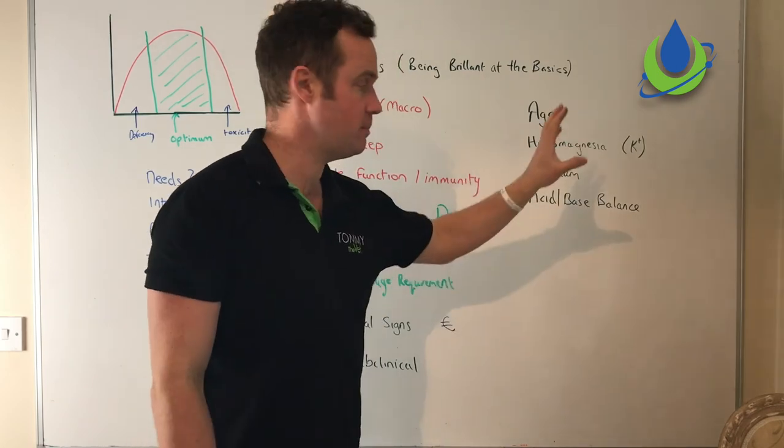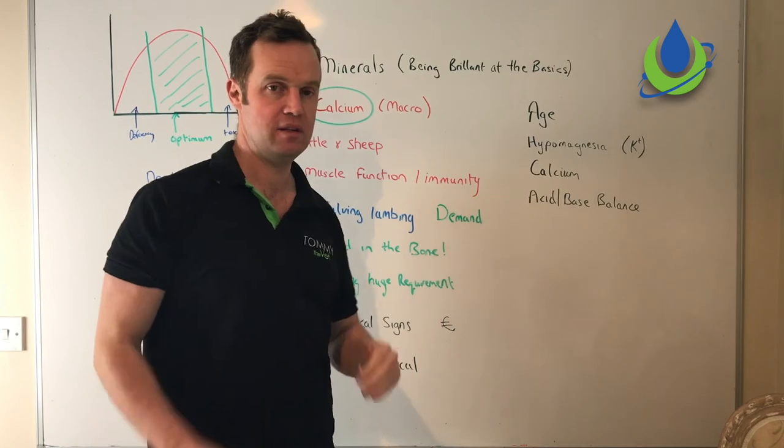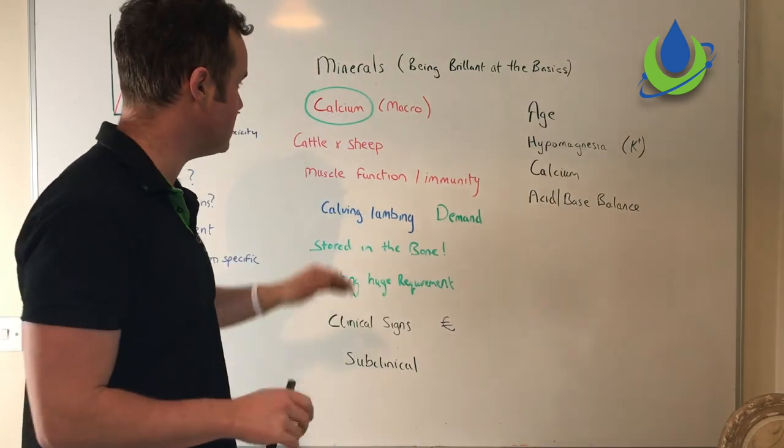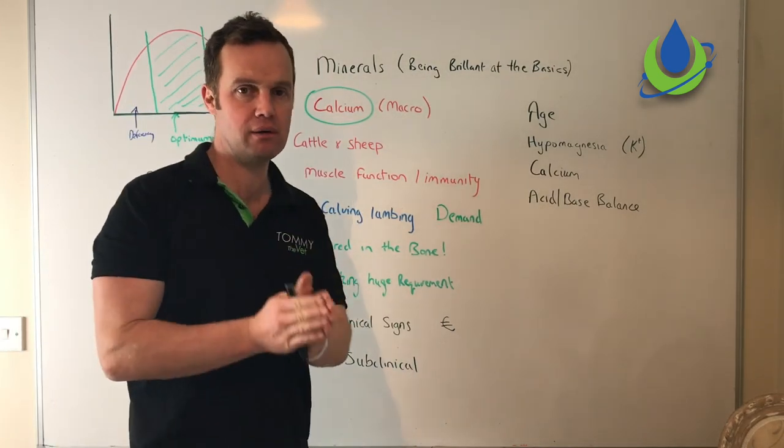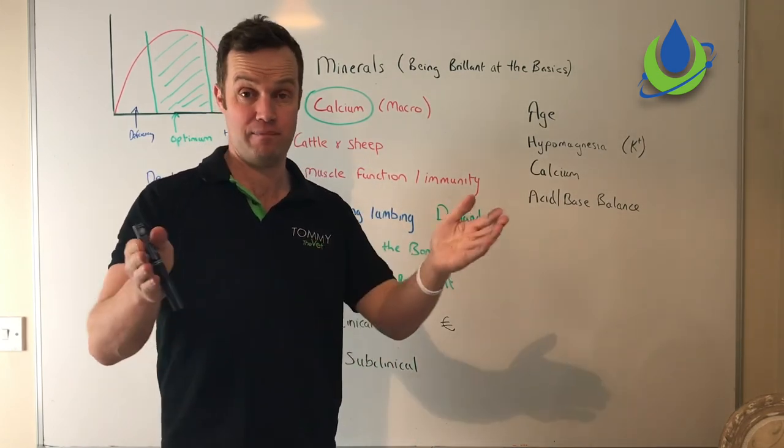There's a number of things to consider. In an Irish system, what we find is hypomagnesemia and high potassium are the key ones. Calcium supplementation is key. If we can manage calcium, particularly around calving in the cow, we can make a phenomenal difference to the overall herd health and performance.